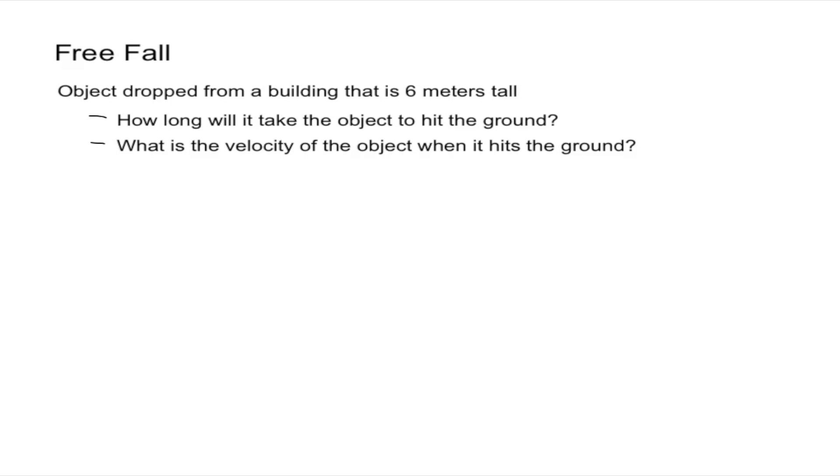The building is stated to be six meters tall which means that the height y is equal to six meters. The object is said to be dropped which means that it has an initial velocity of zero because the object is not being thrown away it's just being dropped. We also know that gravity is 9.8 meters per second squared.